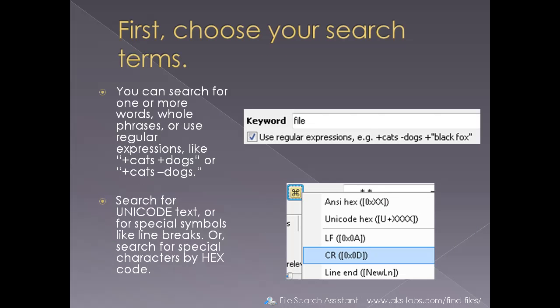First, choose your search terms. You can search for one or more words, whole phrases, or use regular expressions like plus cats plus dogs or plus cats minus dogs. Search for Unicode text or for special symbols like line breaks, or search for special characters by hex code.